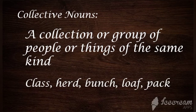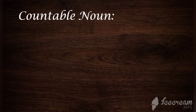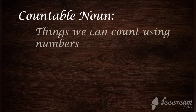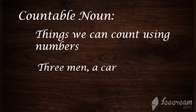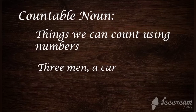For countable nouns — things we are able to count using numbers. For example, three men — if there are three men standing, we can count: one, two, three. Your car — one car, you can count. I have five pens — one, two, three, four, five, you can count. Things you are able to count in numbers come under countable nouns.